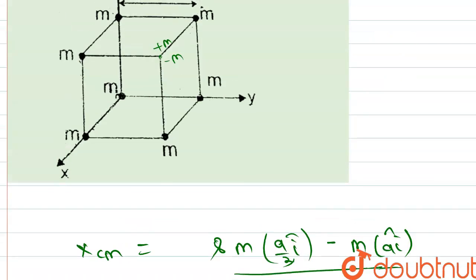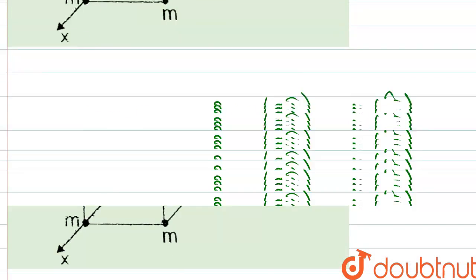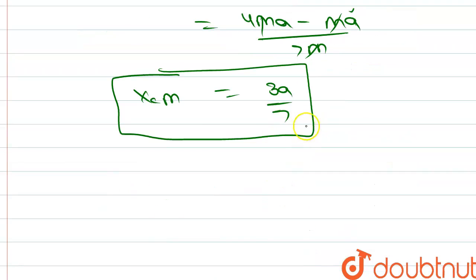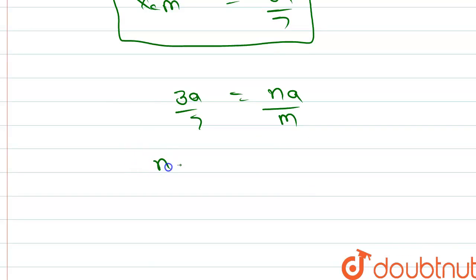It is in the form of na/m. By comparing, 3a/7 equals na/m, so n equals 3 and m equals 7. We are asked in the question for the value of m minus n, so m minus n will be 7 minus 3, which equals